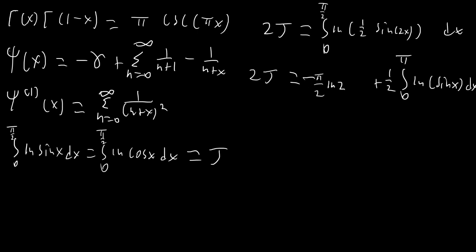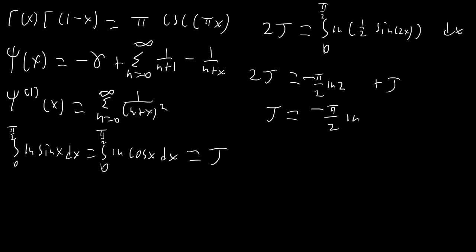Since sin x takes the same values from 0 to π/2 as it does going back from π to π/2, that integral on the right is just 2j, so multiplied by ½ it's just j. That means j = −(π/2)ln 2, and that result is going to be important for our calculation.